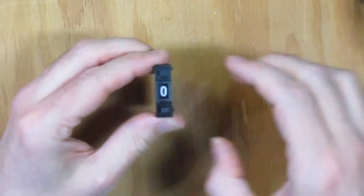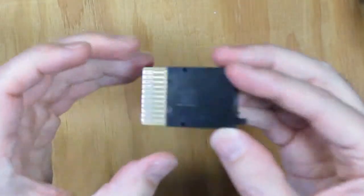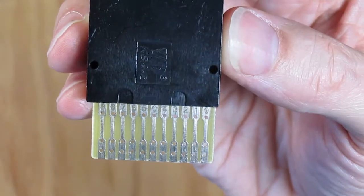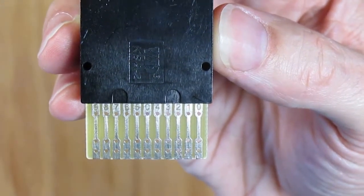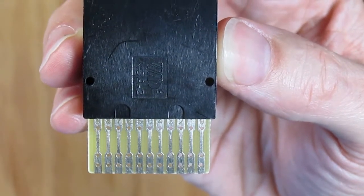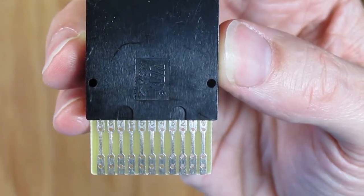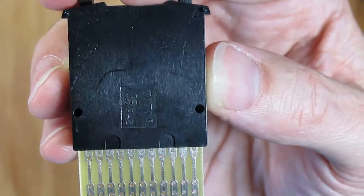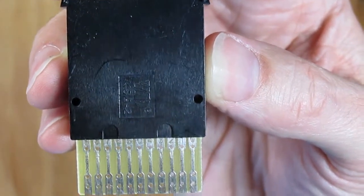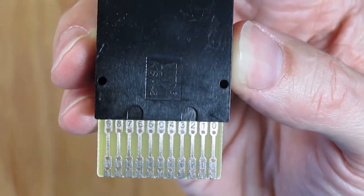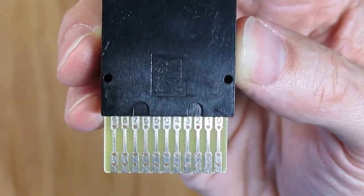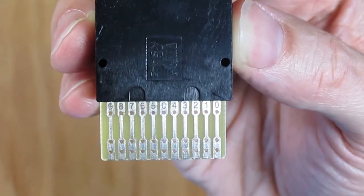These are based on thumbwheel switches. If we zoom in on the back, you can see there are numbers from 0 to 4 and 5 to 9 with a common terminal in the center. We'll have one of these switches for the ones digit, the tens digit, the hundreds digit, and then we're going to have some extra hundreds, because we don't need several thousand ohms but we do need 1300-1400 ohms for this particular project.